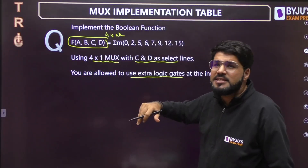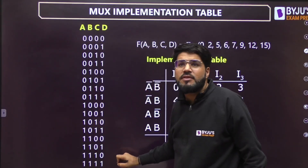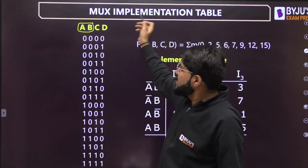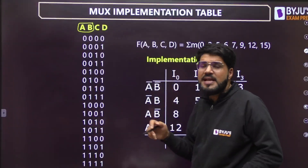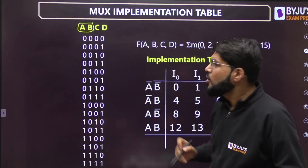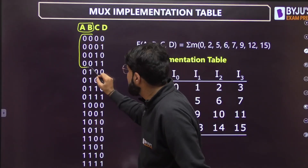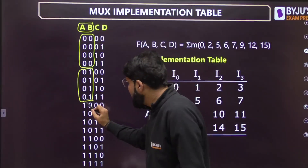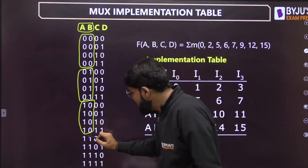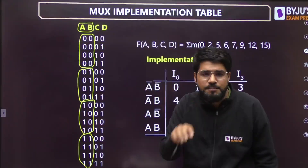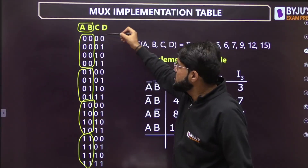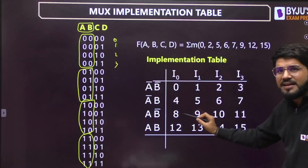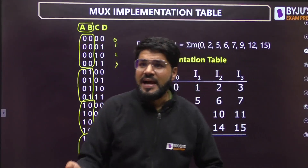Before making the implementation table, write down all 16 combinations of the 4 bits A, B, C, D. C and D are at the select lines, so A and B are at the data lines. A and B can be in 4 states: 00, 01, 10, 11. Where A,B=00, those are minterms 0–3; A,B=01 gives 4–7; A,B=10 gives 8–11; A,B=11 gives 12–15. So there will be 4 rows in the implementation table.